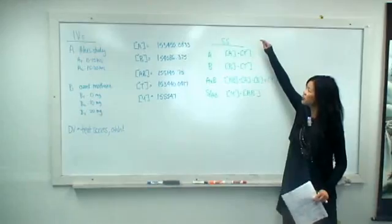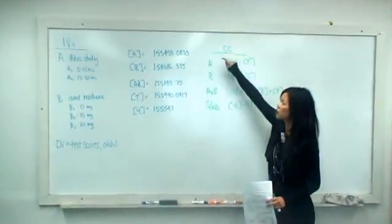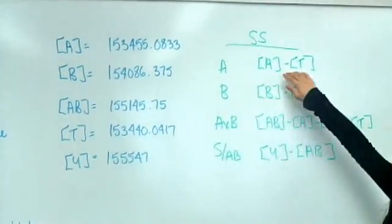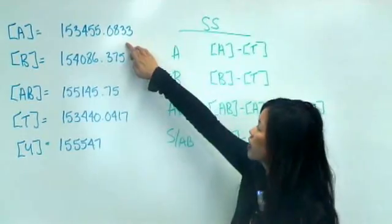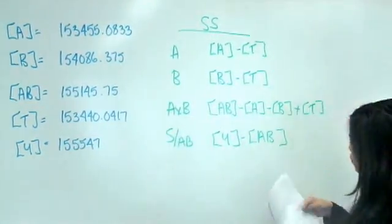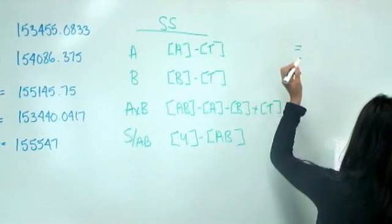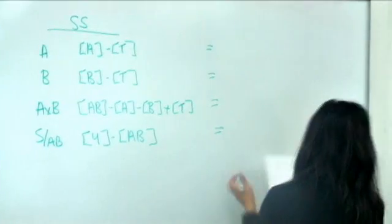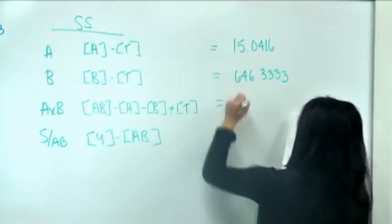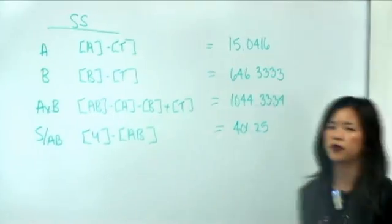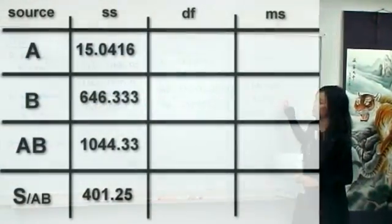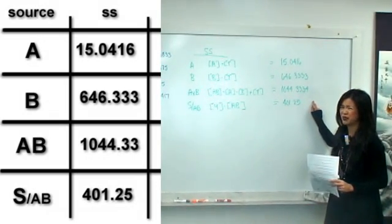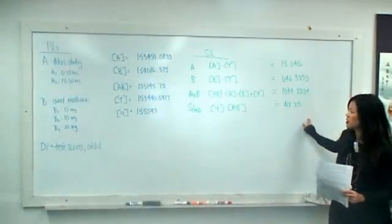Now that we have all our bracket terms, we're just going to plug and chug. A bracket minus T bracket gives your SS for A, and so on. Here are our final sum-of-squares terms. You should never get a negative number — if you do, you've made a mistake somewhere and you have to go back and fix it.